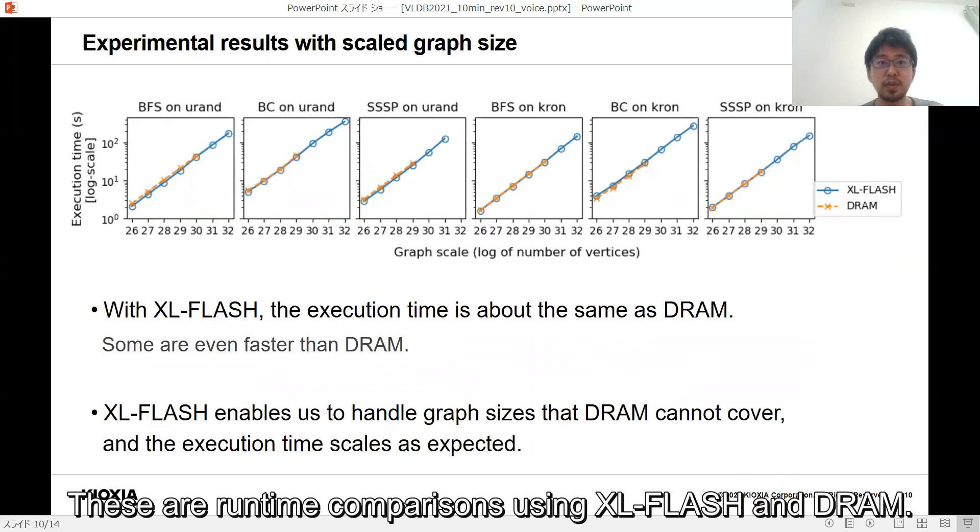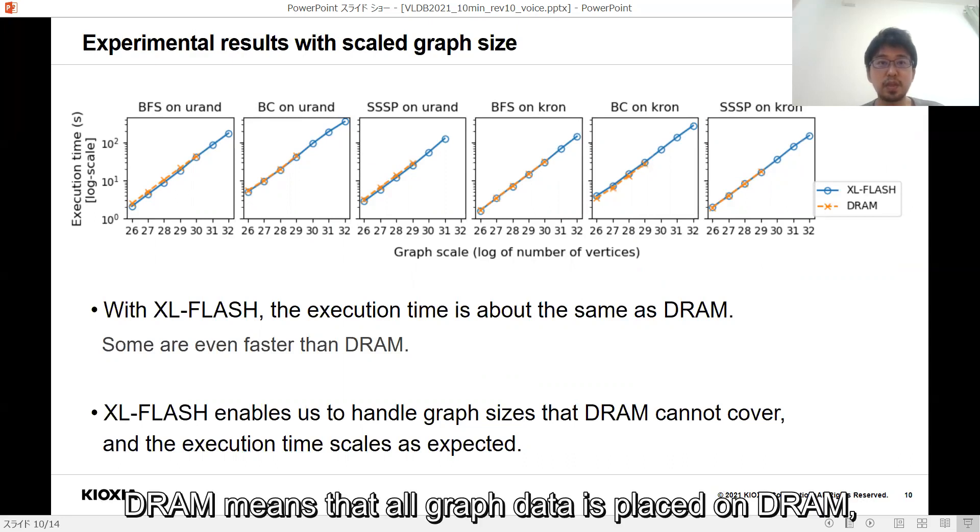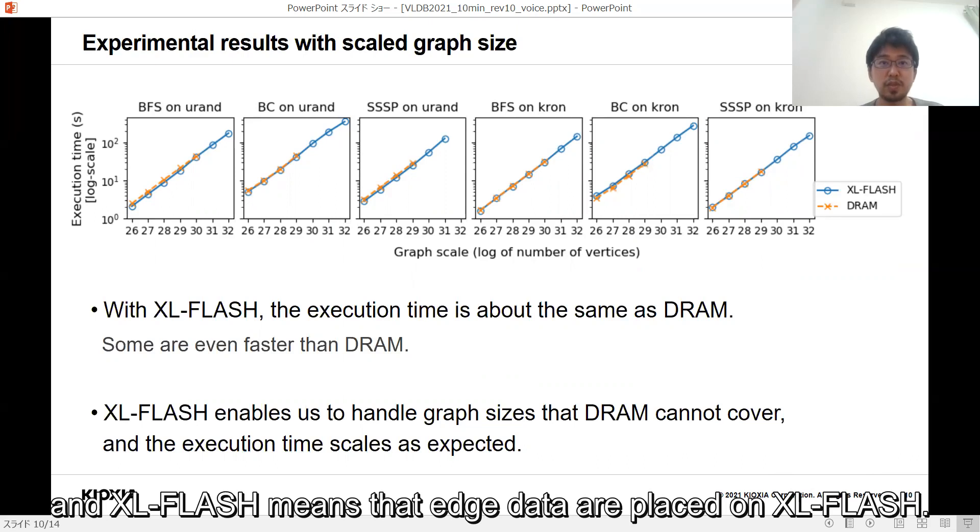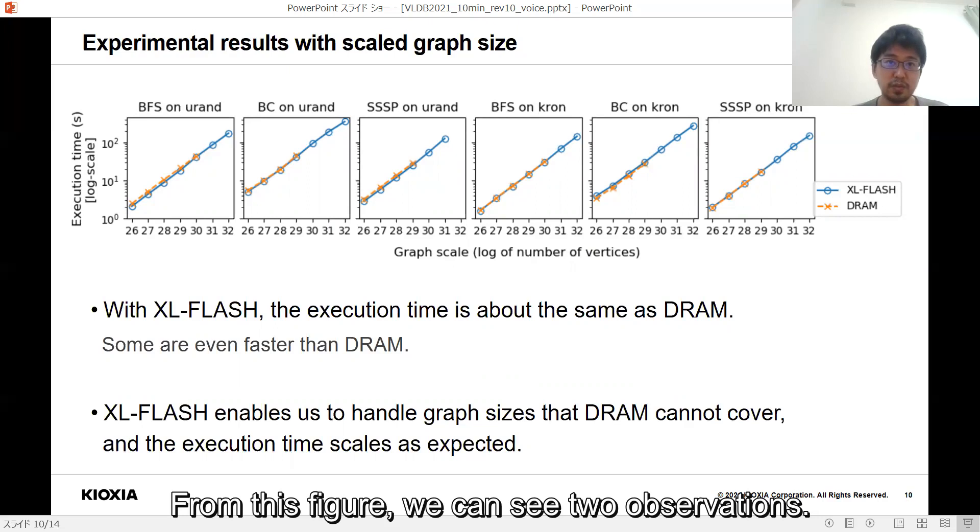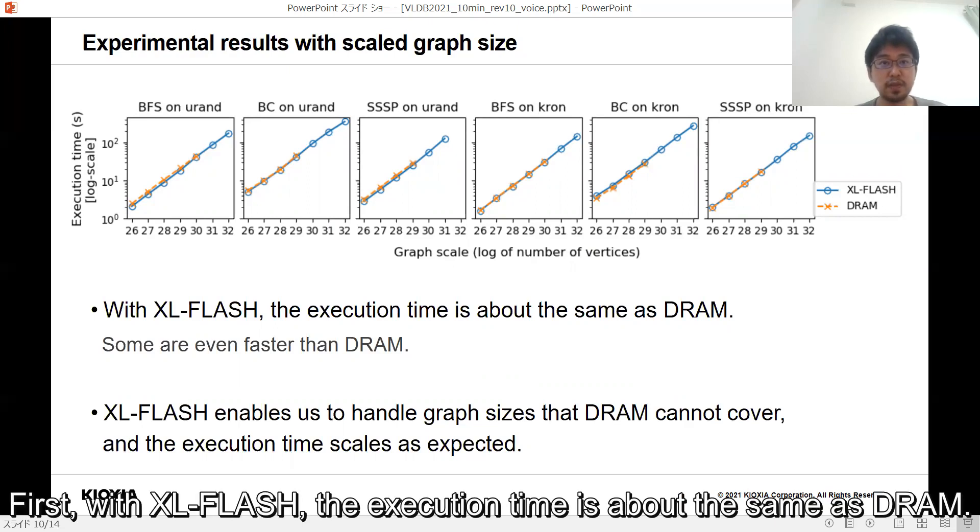These are runtime comparisons using XL-FLASH and DRAM. DRAM means that all graph data is placed on DRAM, and XL-FLASH means that edge data are placed on XL-FLASH. From this figure, we can see two observations. First, with XL-FLASH, the execution time is about the same as DRAM.